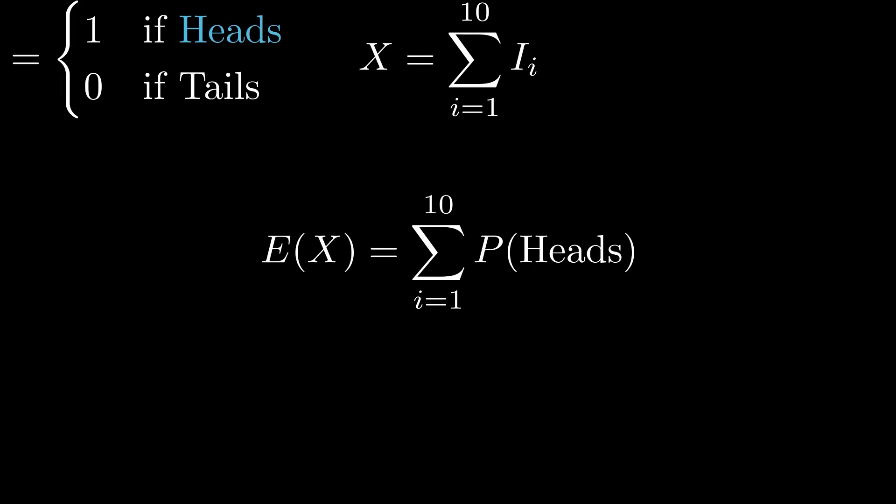Since the probability of getting heads is 0.5, we can substitute this value in the equation. After solving the equation, the expected value of the random variable X comes out to be 5. This means that on average you can expect to win $5 per roll of the coin.